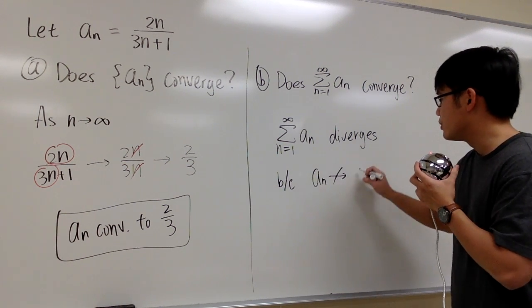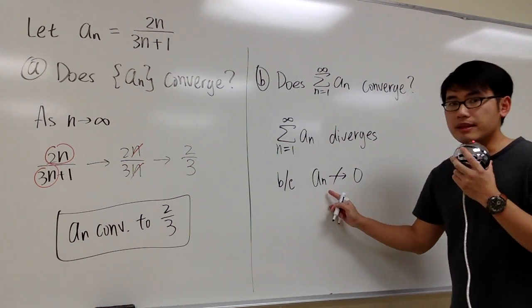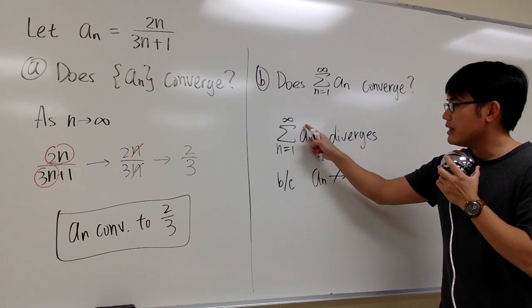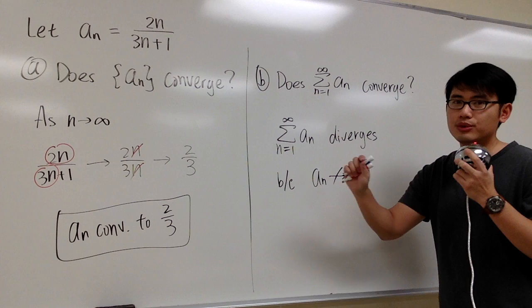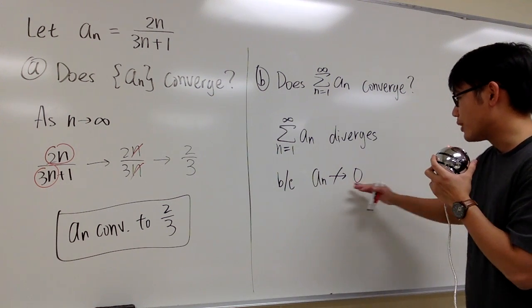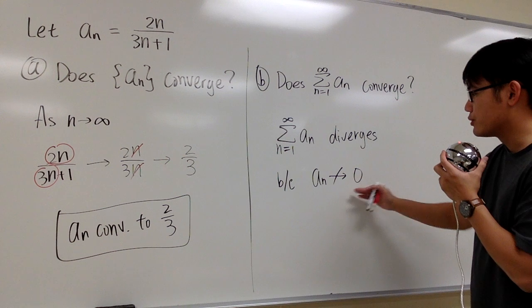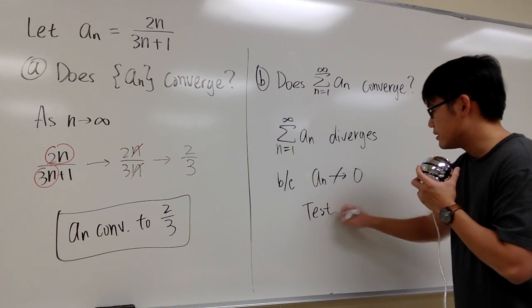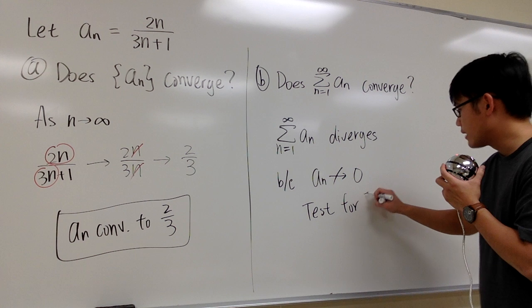does not approach 0. Because the only way that we can possibly have a finite sum is that this formula inside approaches 0, and that's the test for divergence. So we can say this right here, because a_n does not approach 0, and that's the test for divergence.